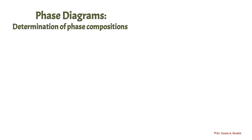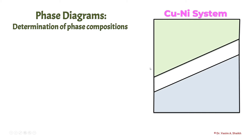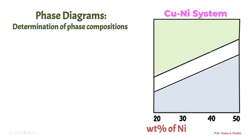For determining the phase composition, we have to take an example of a phase diagram and then we will see how to determine the composition of each and every phase. We will take an example of the copper-nickel system, which is a binary phase diagram having two components: copper and nickel. This is the phase diagram. On the x-axis, we have the weight percent of nickel starting from 20 and going up to 50. This is a magnified version of the phase diagram — it is not starting from 0 and not going to 100.